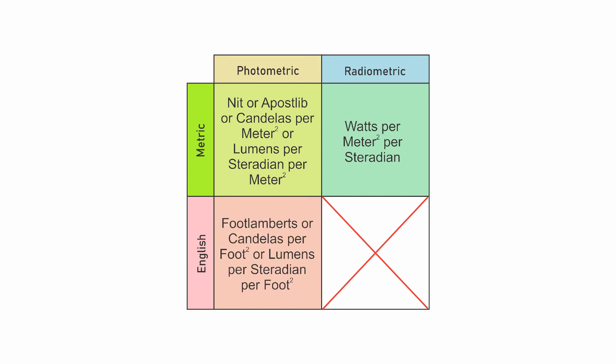In the imperial system, the units for luminance or brightness are foot lambert, candelas per square foot, or lumens per steradian per square foot. Again, these are just different labels for the same measured value.